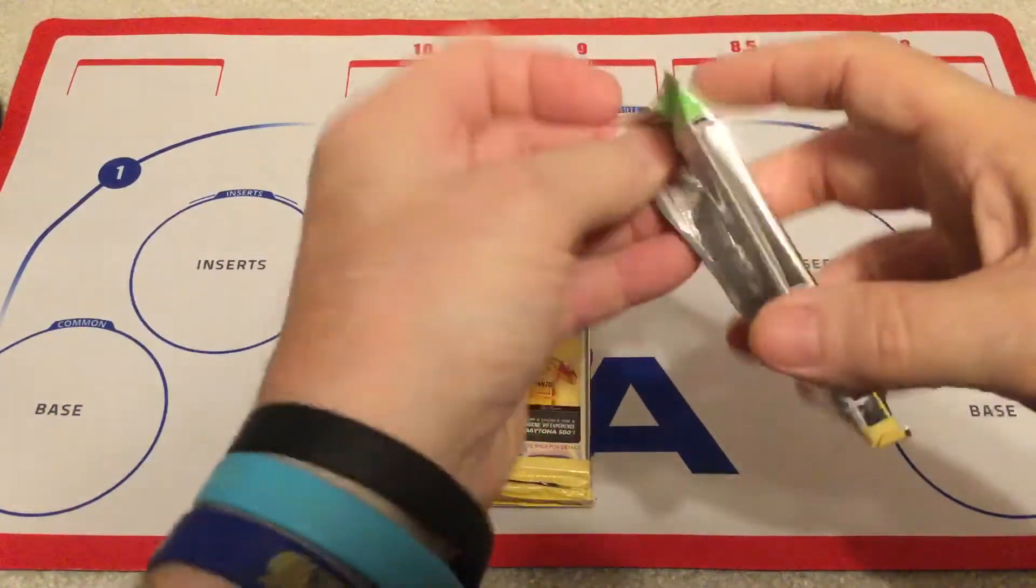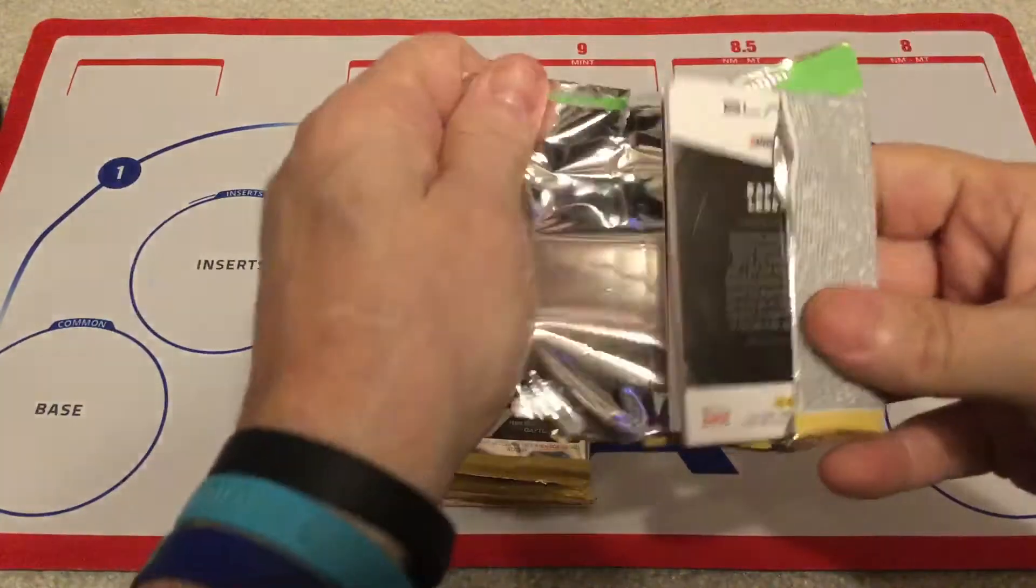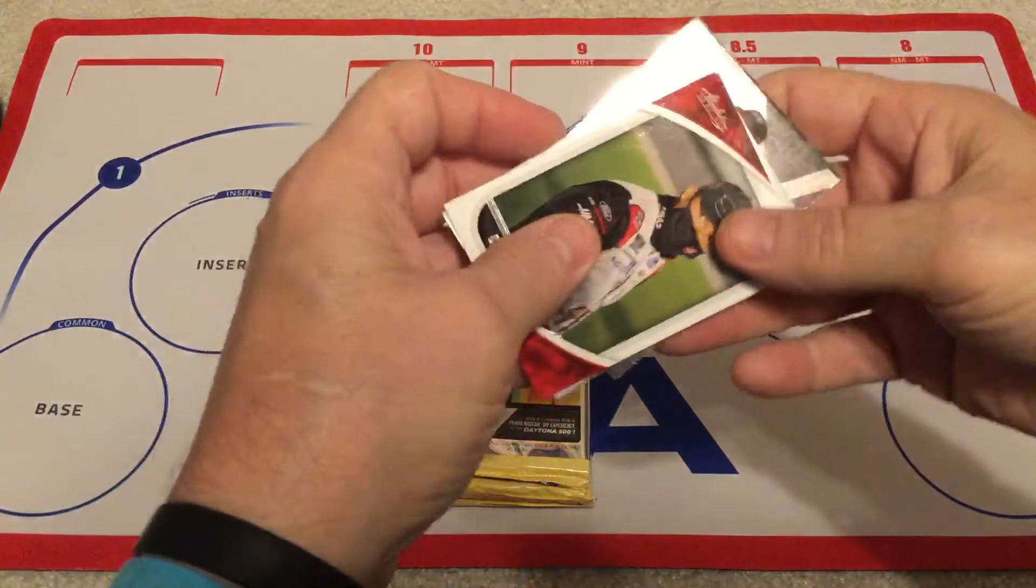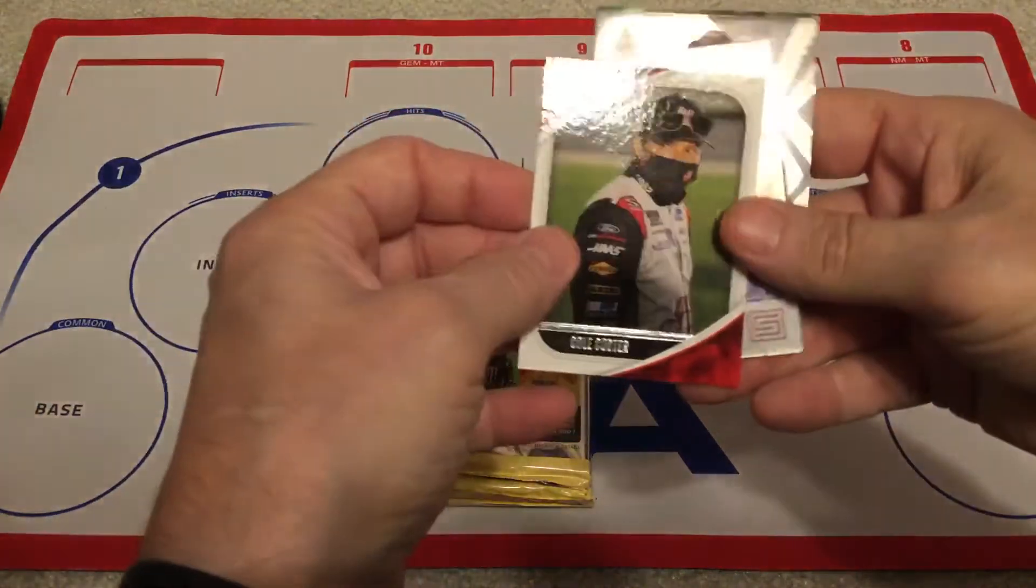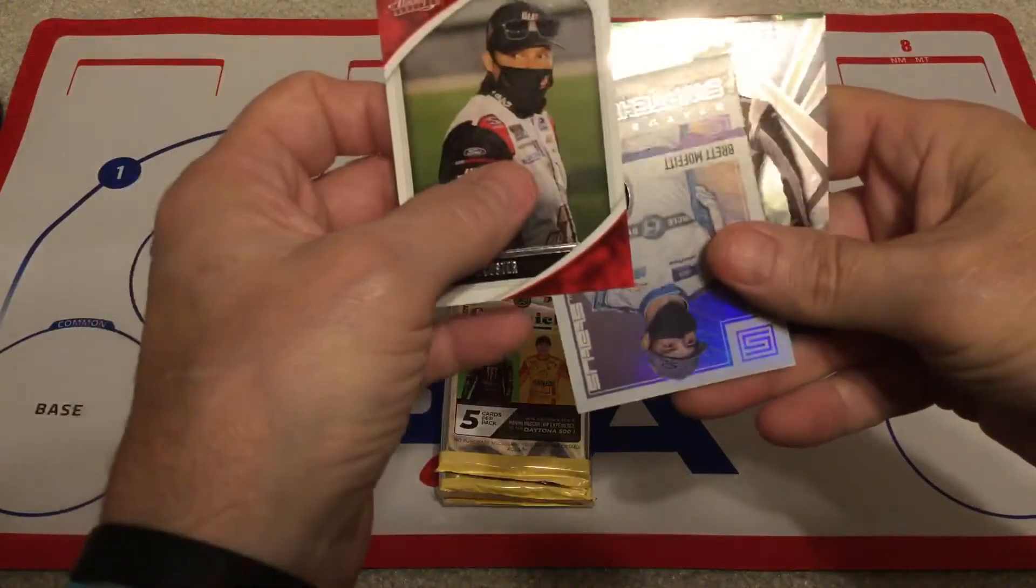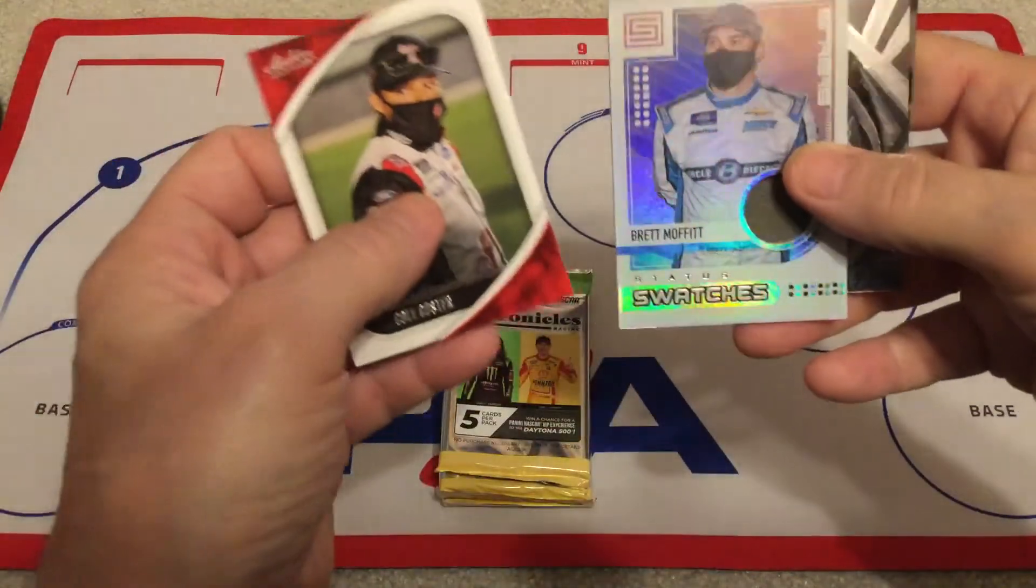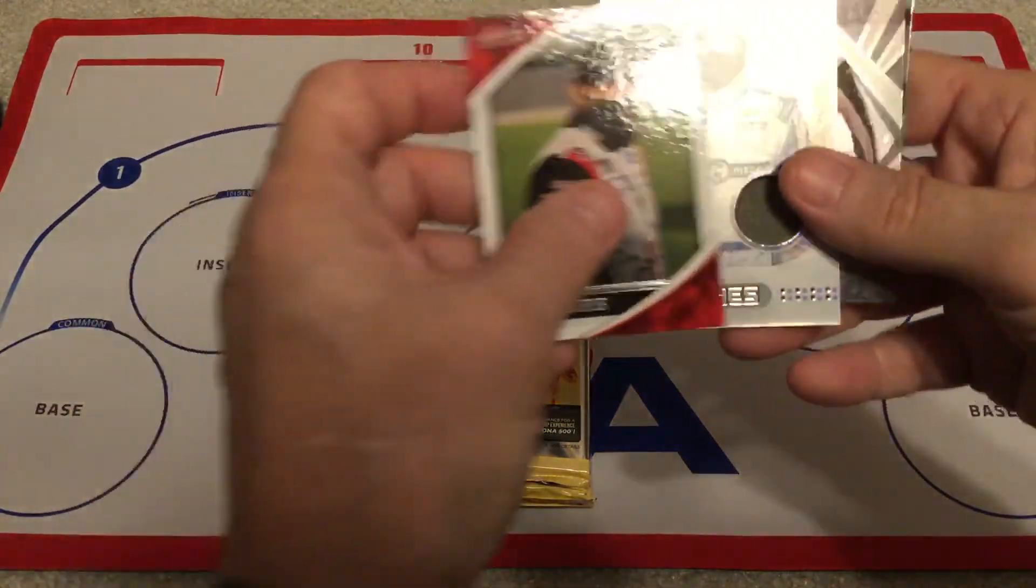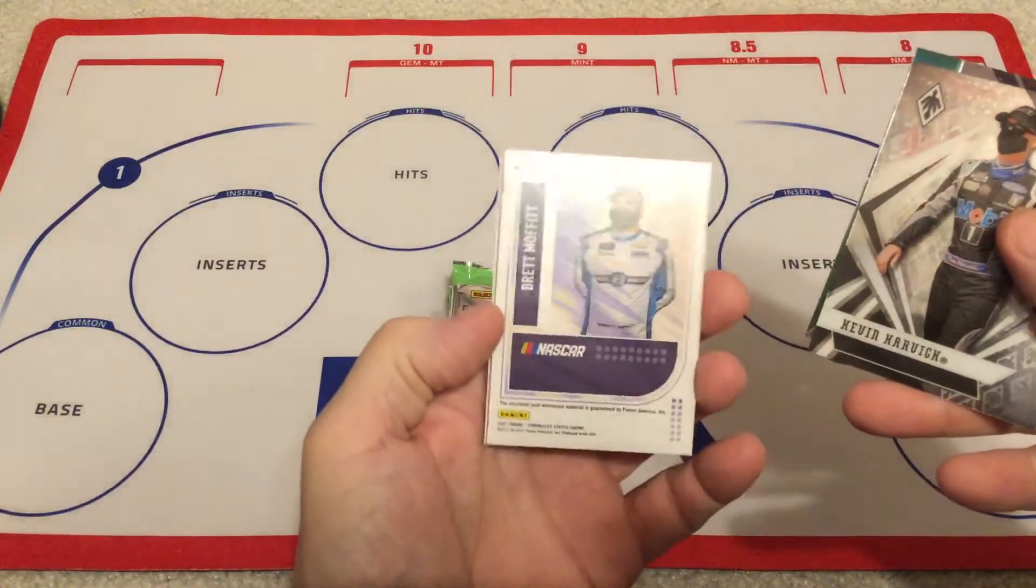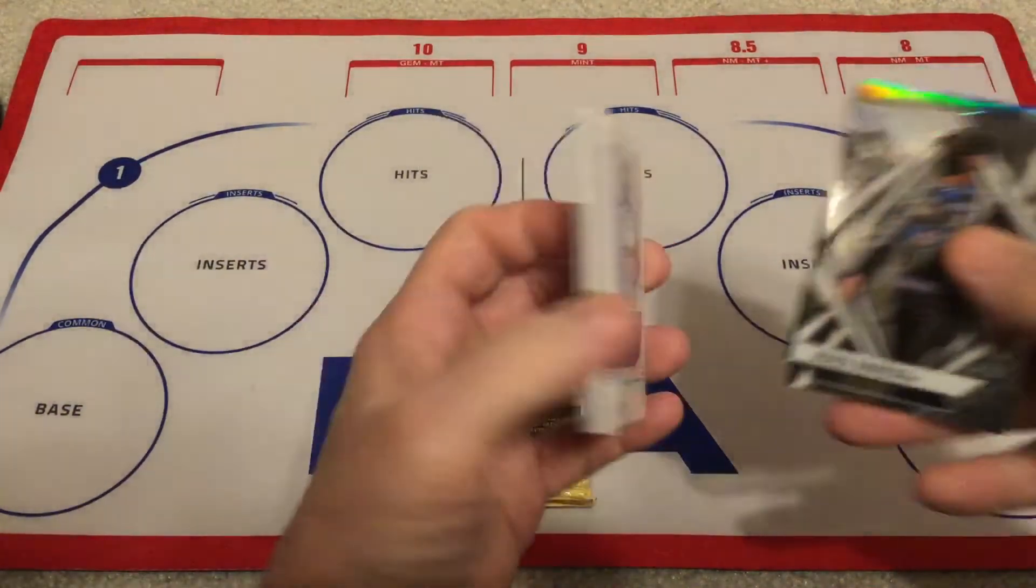So, this first pack is thick. Spectra oil memorabilia right off the gate. All right. Looks like it's going to be memorabilia. So, there's Cole Custer and Absolute, Brett Moffitt Swatch, and it's a Spectra Swatch. Sorry about that.